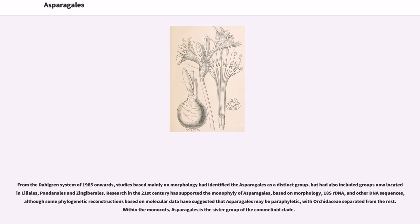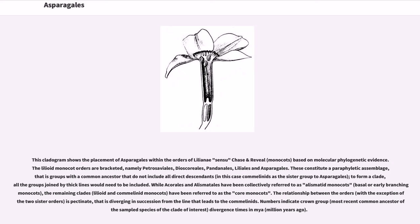From the Dahlgren system of 1985 onwards, studies based mainly on morphology had identified the Asparagales as a distinct group, but had also included groups now located in Liliales, Pandanales, and Zingiberales. Research in the 21st century has supported the monophyly of Asparagales based on morphology and DNA sequences, although some phylogenetic reconstructions have suggested that Asparagales may be paraphyletic, with Orchidaceae separated from the rest. Within the monocots, Asparagales is the sister group of the commelinid clade. The lilioid monocot orders include Petrosaviales, Dioscoriales, Pandanales, Liliales, and Asparagales.